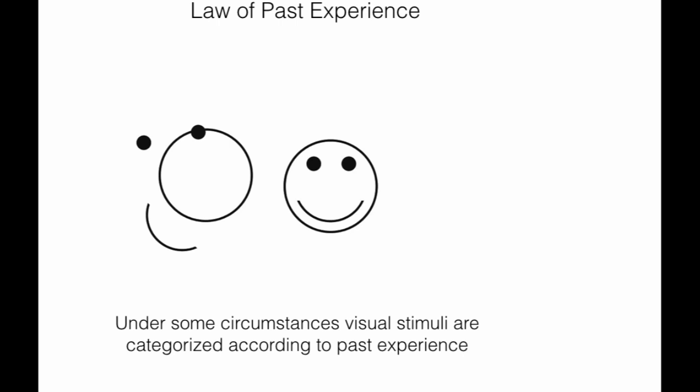Moving on to the last law, which is law of past experience. The law of past experience implies that under certain circumstances, visual stimuli are characterized according to past experience. In these two images, you can see one on the left hand side and one on the right hand side. The elements used are similar.